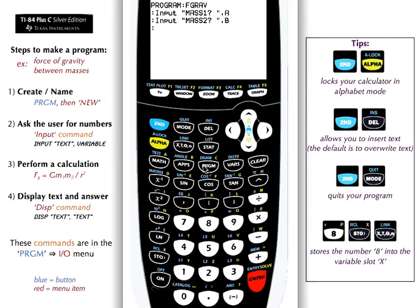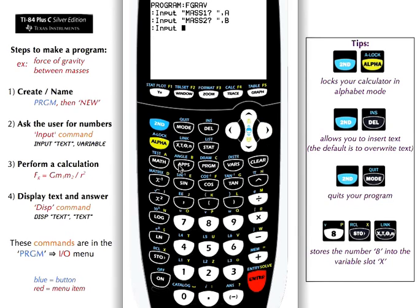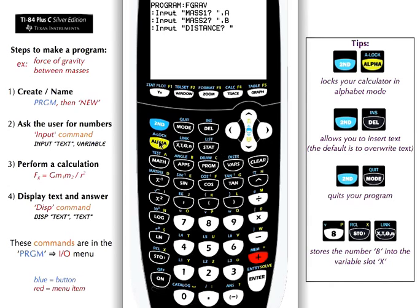Finally, we want a distance. So program, IO, input. Type distance, add a question mark, then a space if it looks nice for the user, then unquote. Notice you can use second alpha to lock your mode into alphabet mode so you can keep typing. Comma, alpha, C.